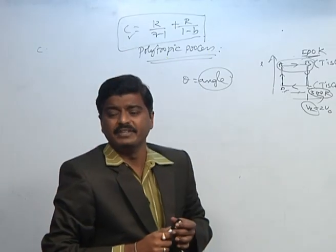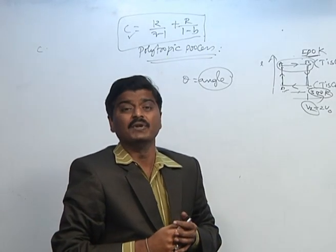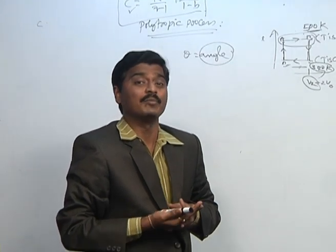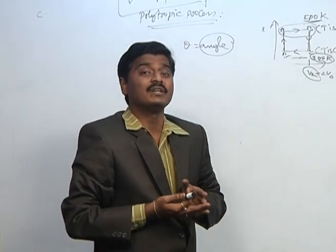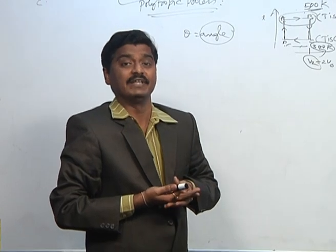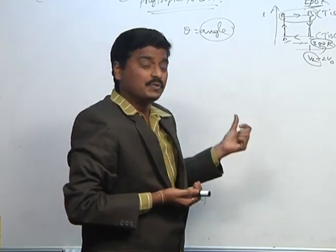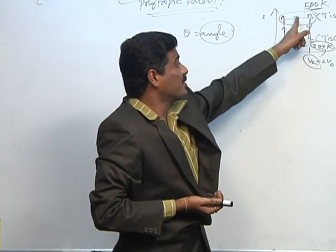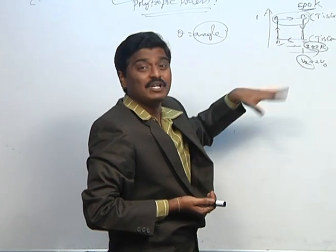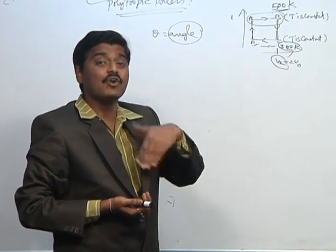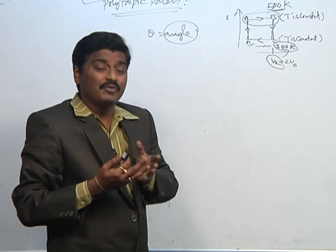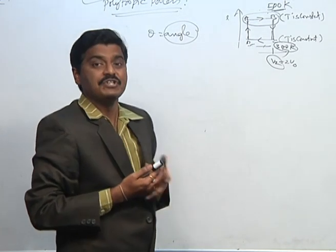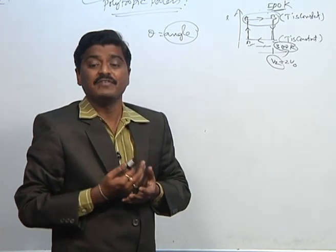Today we discussed isothermal, adiabatic, isochoric, and polytropic processes, and work done in each of these different processes. Students, remember how the process varies and how work done varies from process to process in both cyclic and non-cyclic processes. If you practice these formulas and derivations, you will definitely score well.